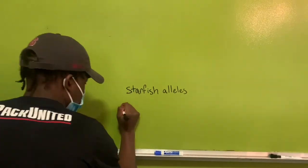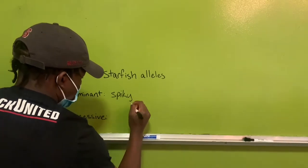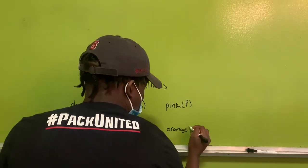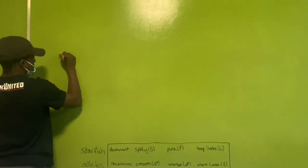The eukaryotic organism that I chose for this video were starfish. The alleles of the starfish included spiky, which is dominant to smooth, pink, which is dominant to orange, and long limbs, which is dominant to short limbs.